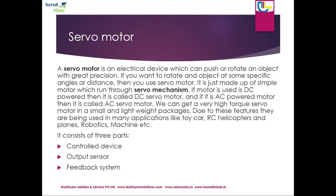If you want to rotate an object at some specific angle or distance, you use a servo motor. It is made up of a simple motor which runs through a servo mechanism. If the motor is DC powered, it is called a DC servo motor. Using DC power, we can get very high torque in a small and lightweight package. Due to these features, servo motors are used in many applications like toy cars, RC helicopters, planes, robotics, and machines.